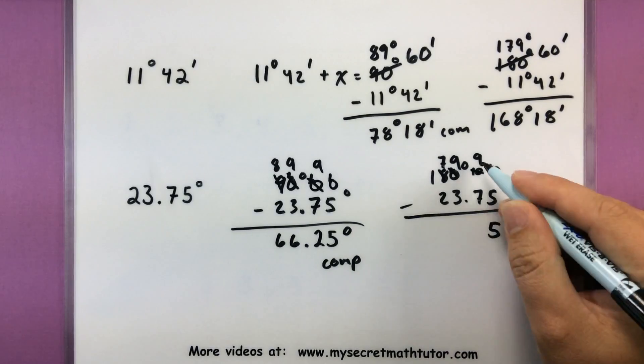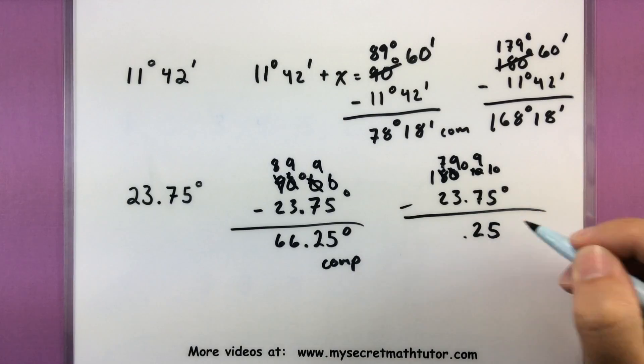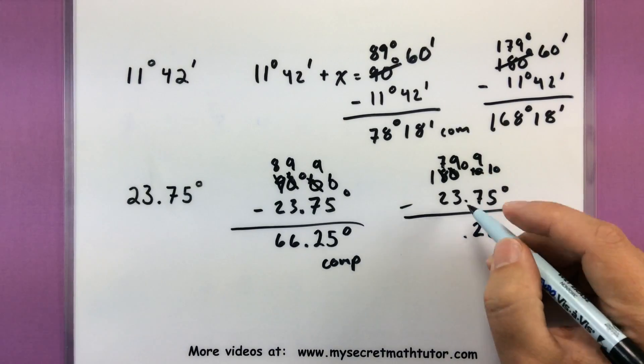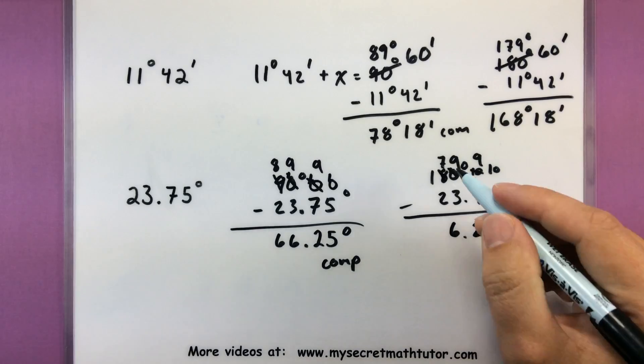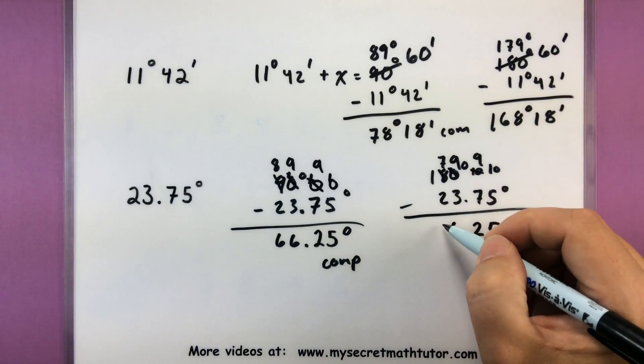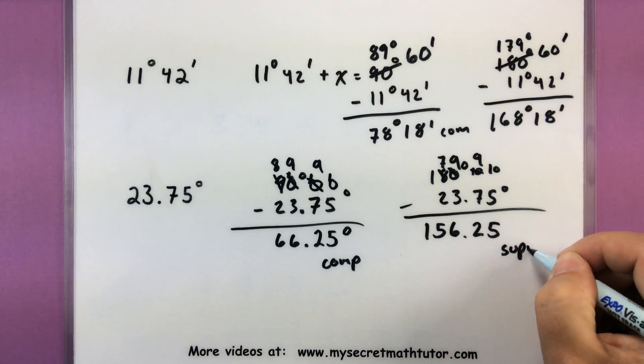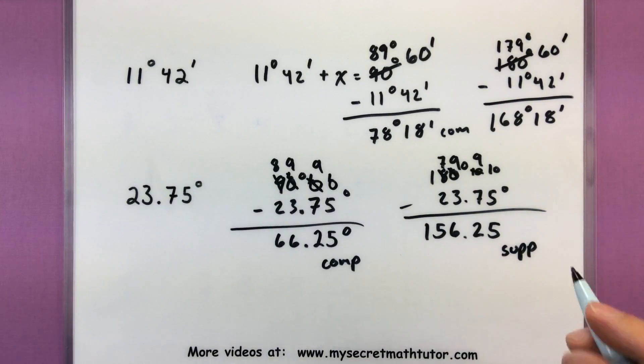So 10 minus 5 is 5. 9 minus 7 is 2. So there's that 0.25 like we'd expect. 9 minus 3 is our 6. 7 minus 2 is a 5. And then there's just a 1. So here is our supplement. 156.25 degrees. Nice.